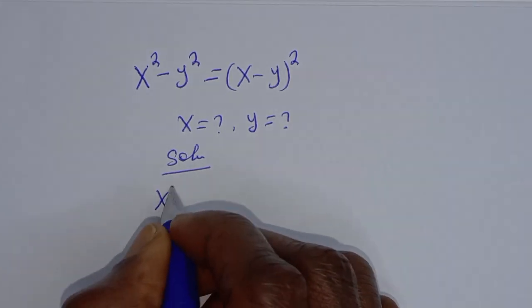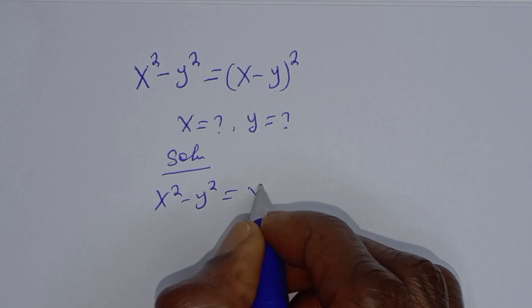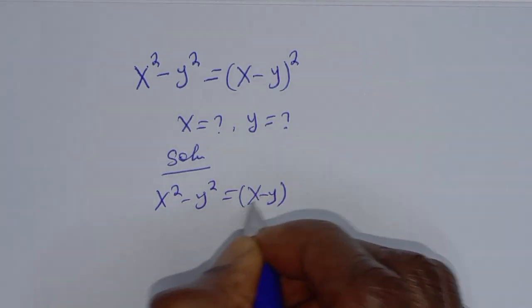We have x squared minus y squared is equal to x minus y all squared.